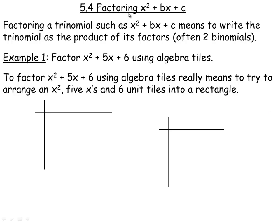In this video lesson, I'm going to show how to factor a trinomial of the form x squared plus bx plus c. In this case, the quadratic term is a 1x squared — it doesn't have to be x, it could be a different variable, but the coefficient is 1. If the coefficient isn't 1, then we would call that ax squared plus bx plus c, and the factoring is a little bit different. I do have another video for that if you want to take a look at it.